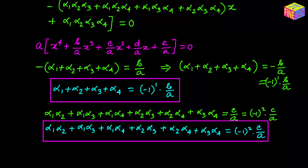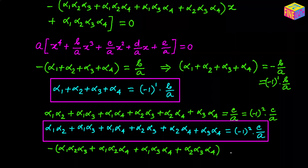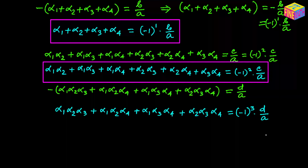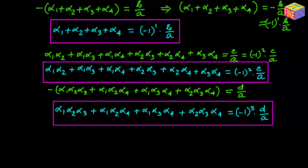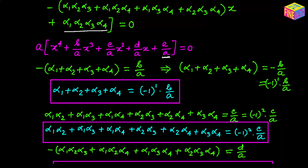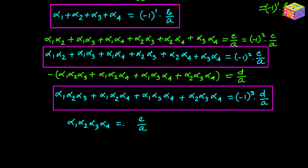That is another important relationship between the coefficients and roots. Now let's compare the coefficients of the x terms. In the expanded form the coefficient of x equals positive d over a from the original form, and multiplying both sides by negative 1 gives negative d over a, written as negative 1 cubed times d over a. Finally comparing the constant terms: the constant term in the expanded form is alpha sub 1 times alpha sub 2 times alpha sub 3 times alpha sub 4, which equals e over a, written as negative 1 to the power 4 times e over a.